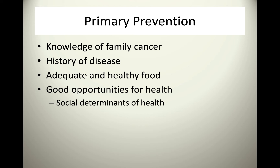For primary prevention, knowledge of your family cancer history at an individual level helps your doctor provide techniques and strategies to hopefully prevent cancer before it occurs. History of disease, adequate and healthy food — the food you eat can directly impact your cancer risk. Good opportunities for health, such as walking every day and mental health, are all primary prevention. Being aware of these is key, and this is all at an individual level.